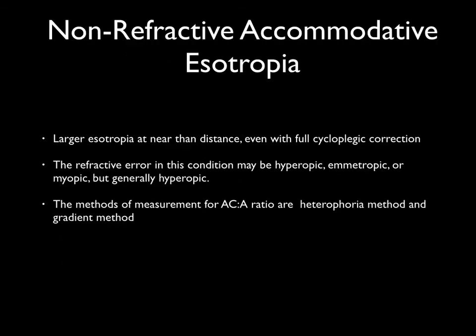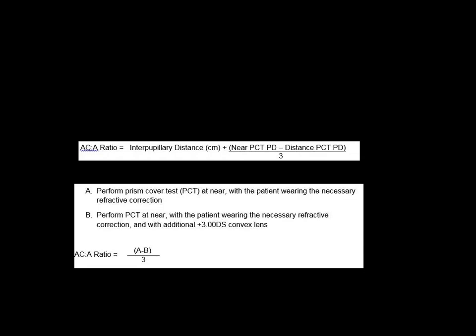Coming to the second variety, called non-refractive accommodative esotropia. A subgroup of patients with accommodative esotropia have deviation significantly greater at near than at distance, and are considered to have a high AC/A ratio esotropia. These children need more accommodative effort to look at near, thereby causing more convergence and higher esotropia for near. The refractive error in this condition could be hyperopic, emmetropic, or myopic — hence it is called non-refractive, as it is not dependent on refractive status.